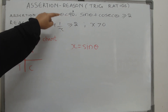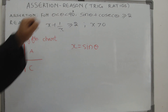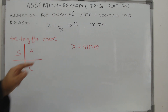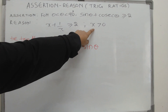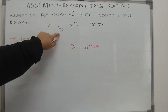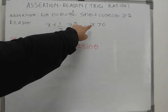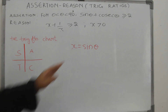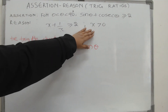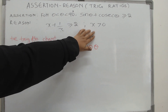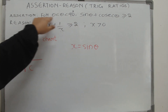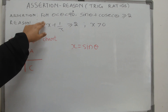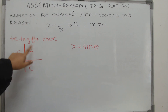Why is it mentioned that theta is an acute angle? Because there is a condition: this will be true only if x is positive. It will not be true for x equal to minus two or x equal to minus one. It comes with the condition that x is positive — that is why this restriction is given.